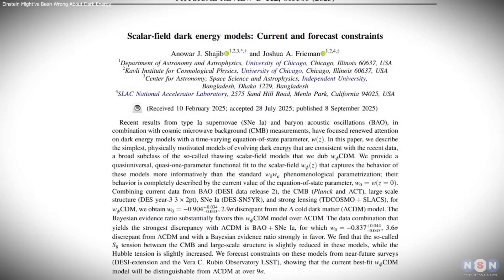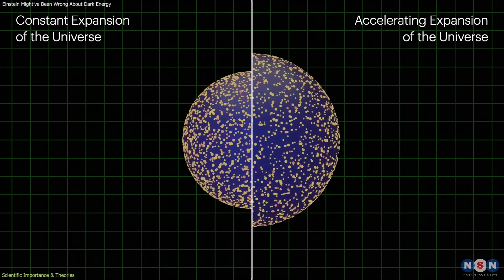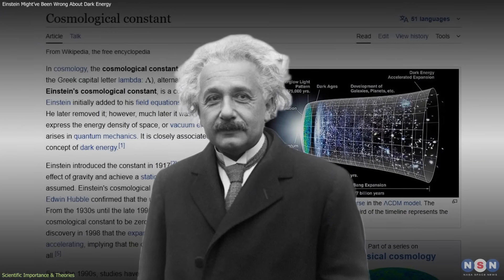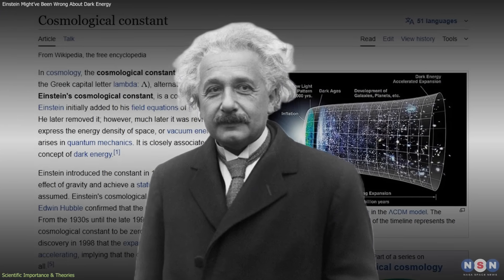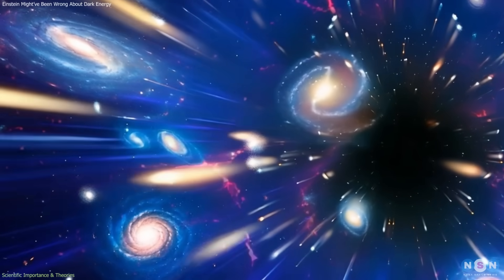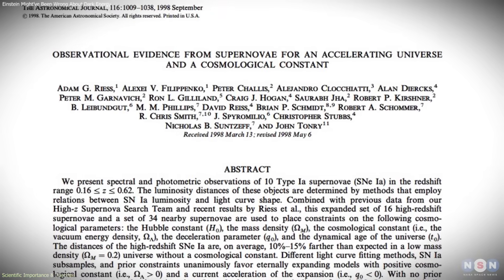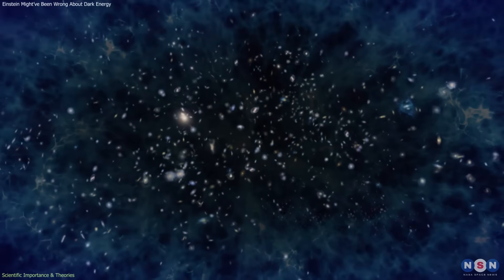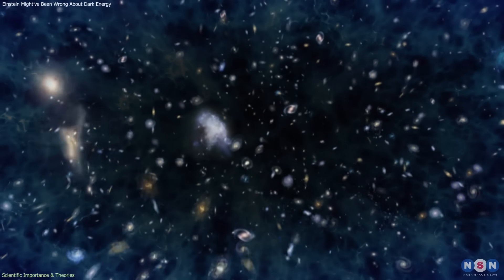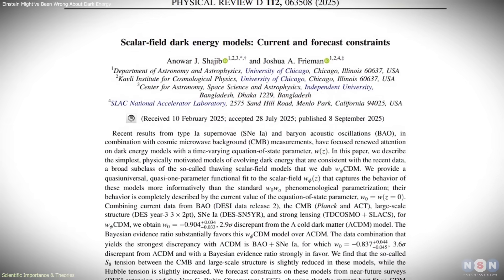If confirmed, this would be one of the most profound shifts in cosmology since the discovery of cosmic acceleration itself. Einstein originally introduced the cosmological constant in 1917 to maintain a static universe, later discarding it after expansion was discovered. Ironically, it resurfaced decades later as the simplest explanation for the accelerating universe. The concept was elegant: a constant vacuum energy driving expansion at a steady rate. The new findings suggest that this explanation might be incomplete.